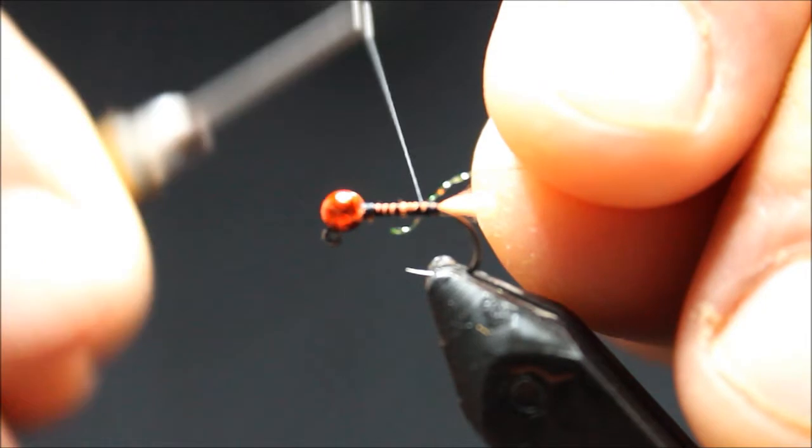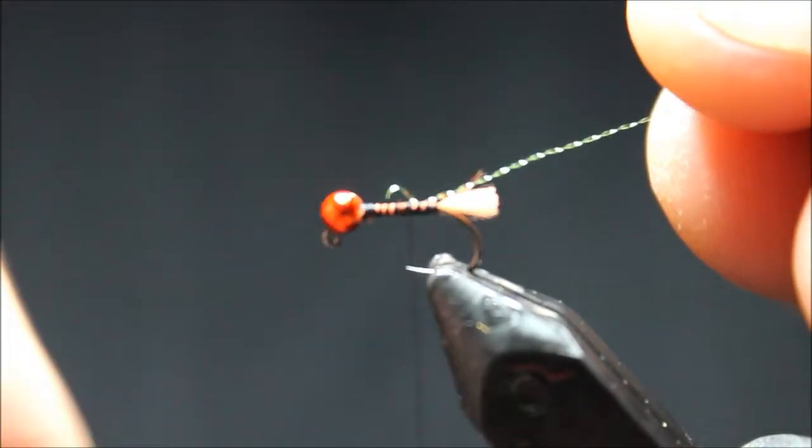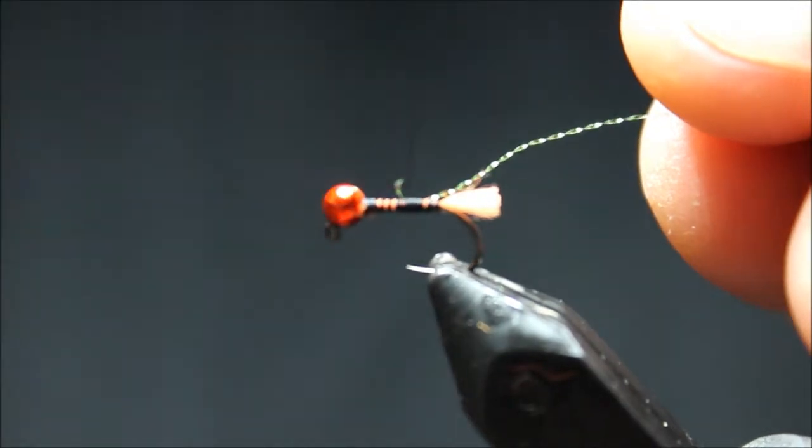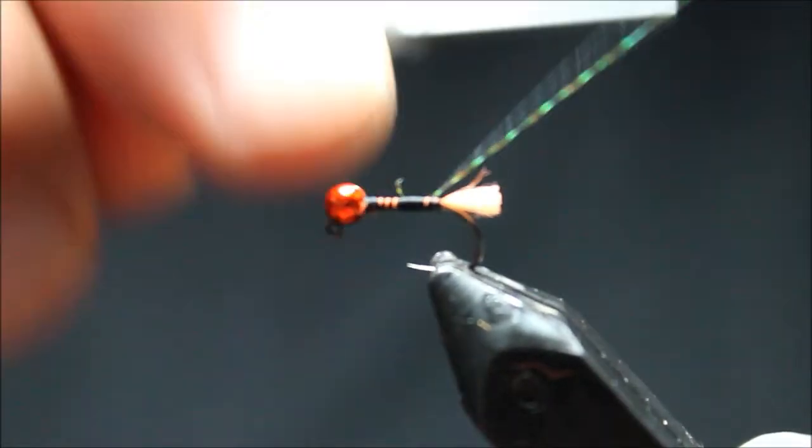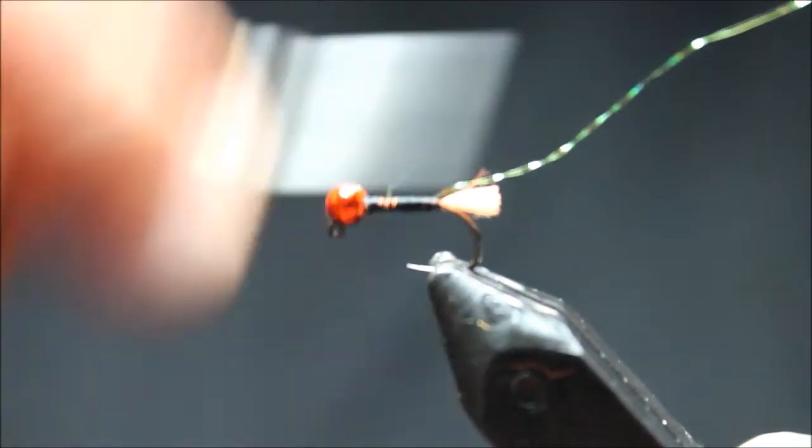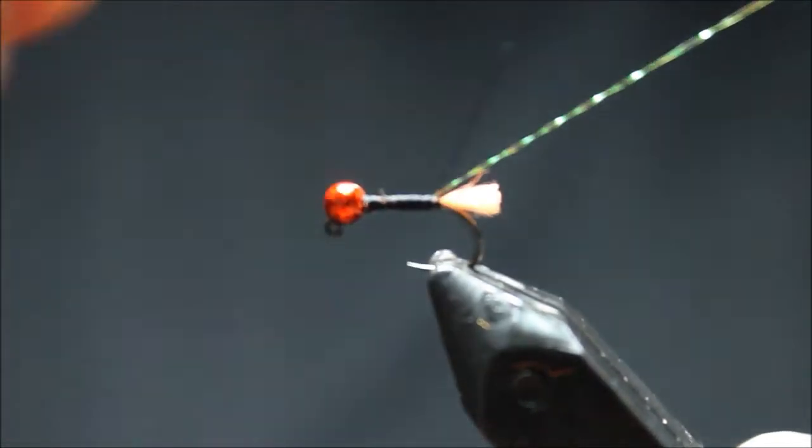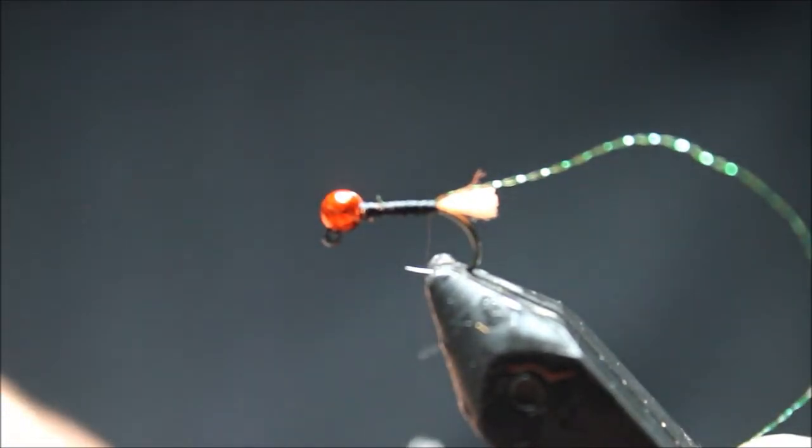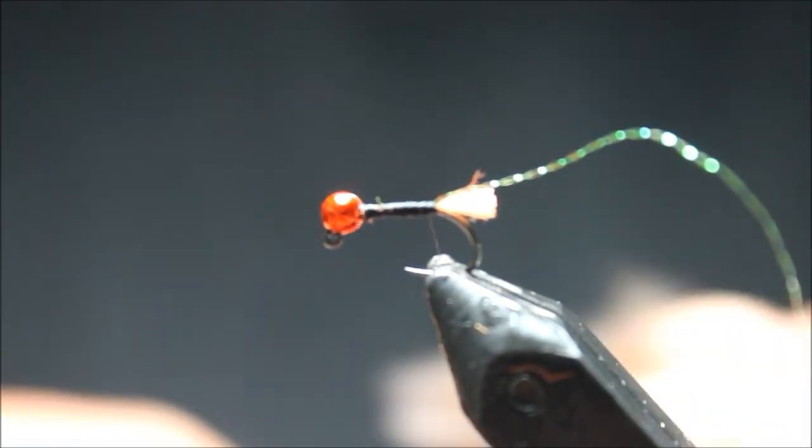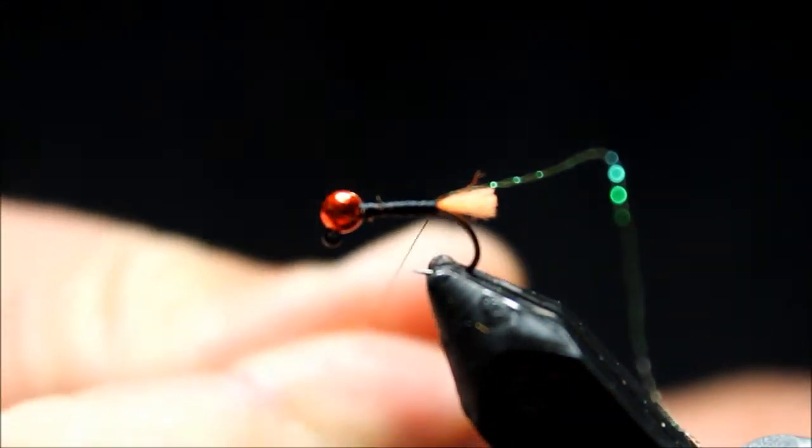Next I'm going to tie in a piece of olive colored mid-sized crystal flesh for my ribbing. Wrap that down, I'm going to go ahead and cover that well. I'm not too concerned about making a taper on this body because I can do that with the dubbing that I'm about to apply.